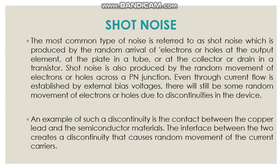Next is shot noise. The most common type is shot noise, which is produced by the random arrival of electrons or holes at the output element. An example of such a discontinuity is the contact between a copper lead and a semiconductor material. The interface creates a discontinuity that causes random movement of current carriers and generates shot noise. Shot noise is generated due to electrons and holes.